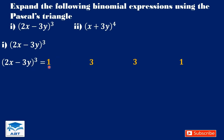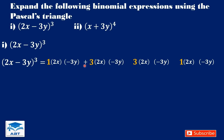We start by multiplying each coefficient by 2x, and again we multiply each coefficient by negative 3y. Then we connect them with plus signs. We give the first 2x an exponent of 3, which is the exponent of the binomial, and reduce it by 1 each time — so the next 2x has exponent 2, then 1, then 0. And we give negative 3y an exponent of 3, reducing to 2, 1, and 0.